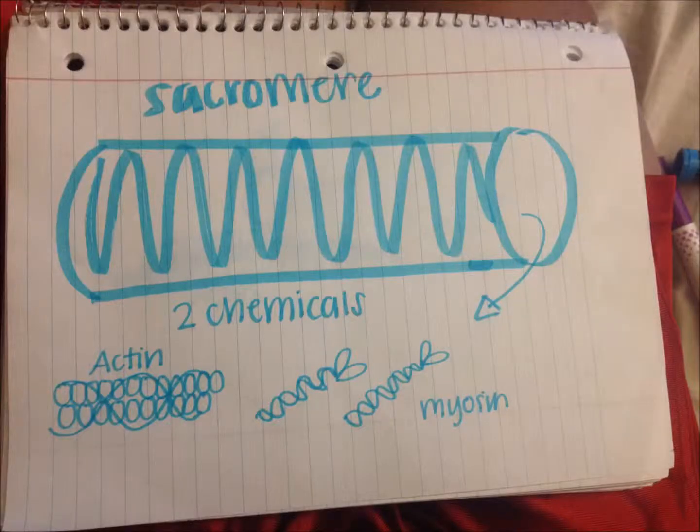What we have here is the sarcomere — the one unit of muscle in skeletal striated muscle. Inside this muscle we have two chemicals: actin, which is shown on the left, and myosin, which is shown on the right.